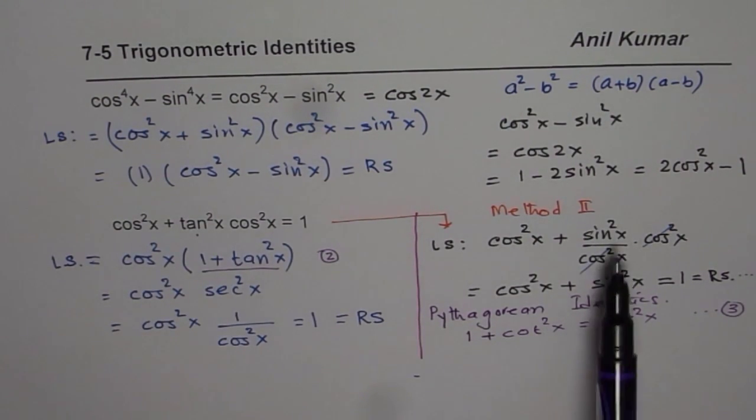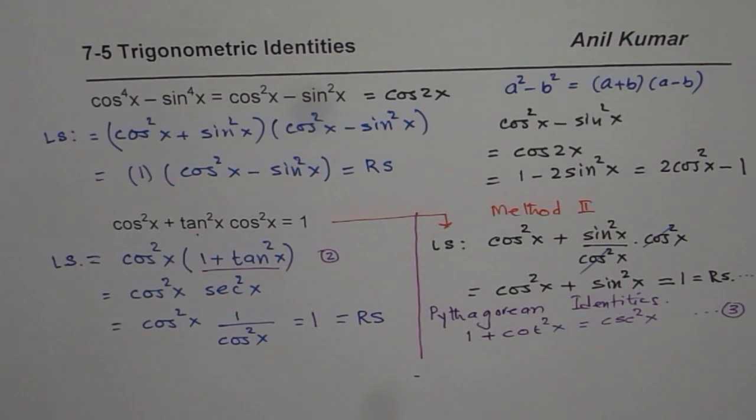Pythagorean identities, writing tan as sine over cos. I hope it really helps you to go forward in this chapter.